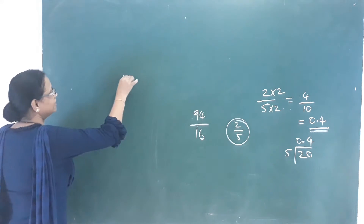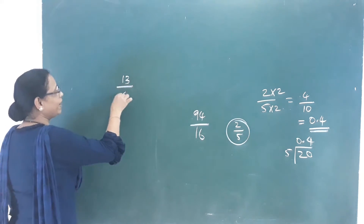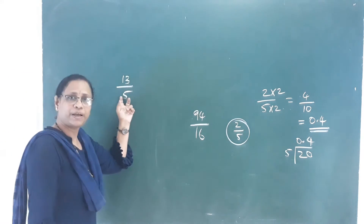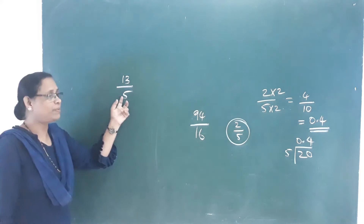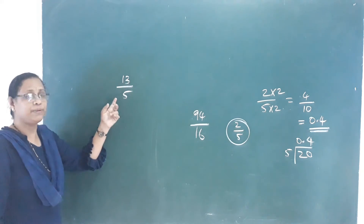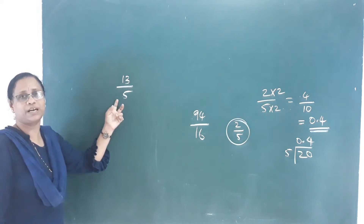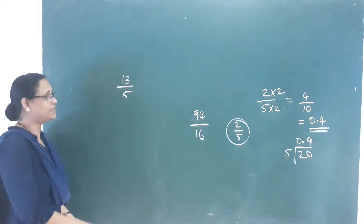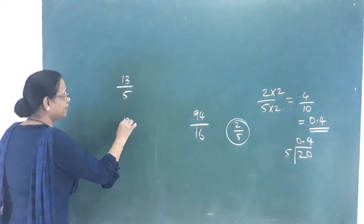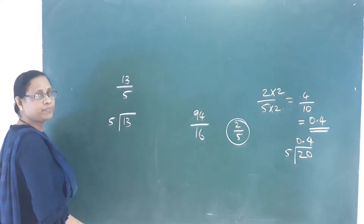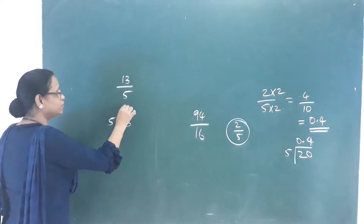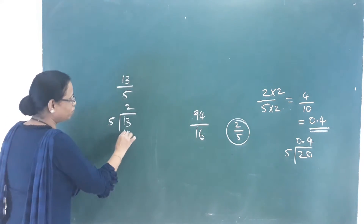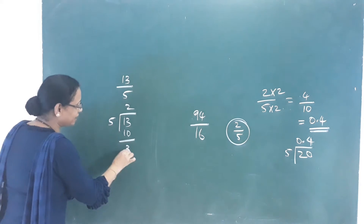Let's take 13 by 5. What fraction is this? If you want to convert this improper fraction to a mixed fraction, divide 13 by 5. 5 goes 2 times giving 10, with a remainder of 3.